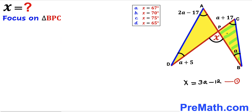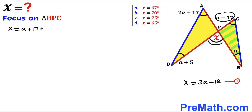Now we are going to focus on the other triangle B, P, C. For this triangle, angle x is our exterior angle whereas the two other angles are our opposite interior angles. So we can write that this exterior angle x is going to be equal to the sum of these two opposite interior angles: a plus 17, plus the other angle a. Combining like terms, angle x turns out to be equal to 2a plus 17. I'm going to label this as equation number two.